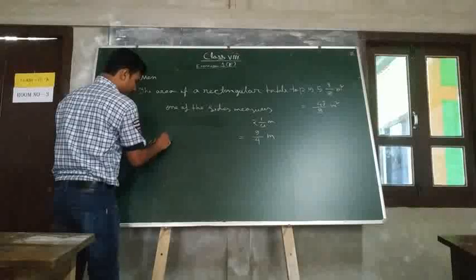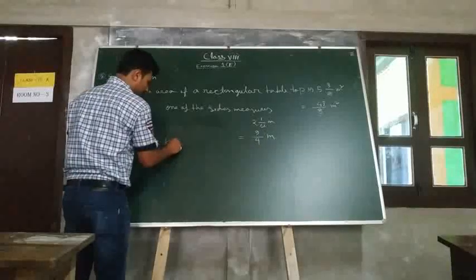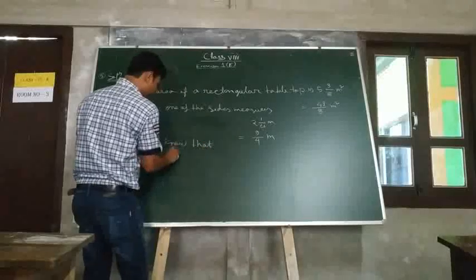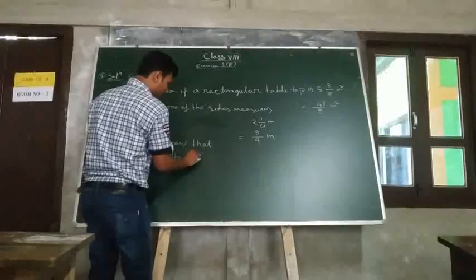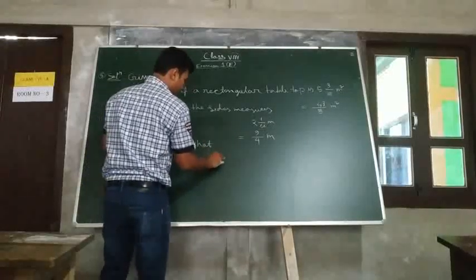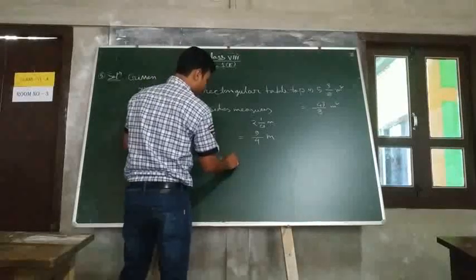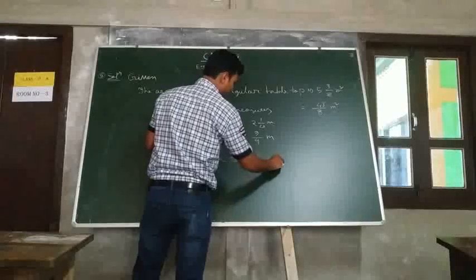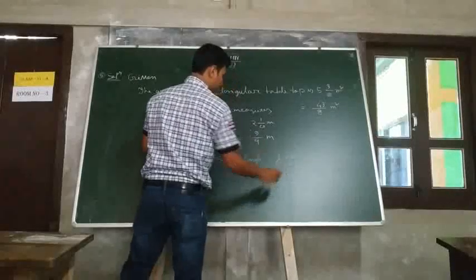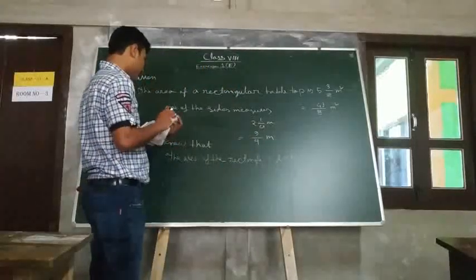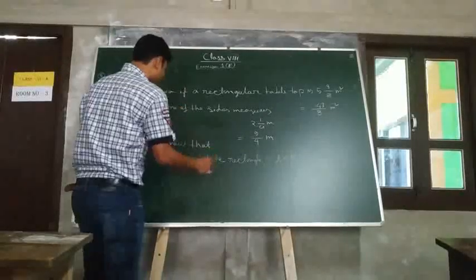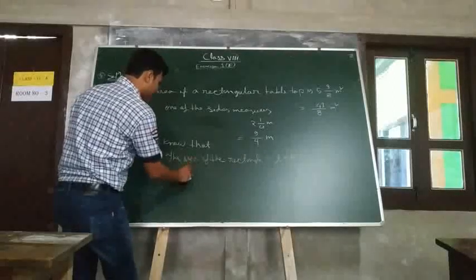We know that the area of a rectangle equals length times breadth. We have to find the length of the other side. That means we are given the breadth.